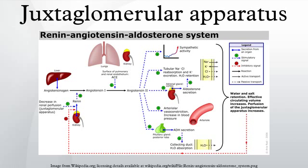This location is critical to its function in regulating renal blood flow and glomerular filtration rate. The three cellular components of the apparatus are the macula densa of the distal convoluted tubule, smooth muscle cells of the afferent arteriole known as juxtaglomerular cells, and extraglomerular mesangial cells.